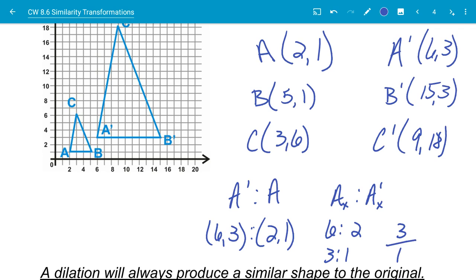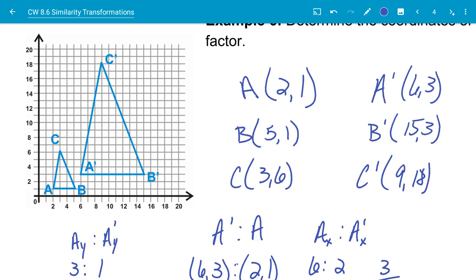And if I look at all of them here, even if I look at A Y to A prime Y, that's going to be 3 to 1 as well. And if I look at any of these, I can see that that holds true. So 5 times 3 is 15, 1 times 3 is 3, 3 times 3 is 9, and 6 times 3 is 18. So my scale factor here is 3 to 1.